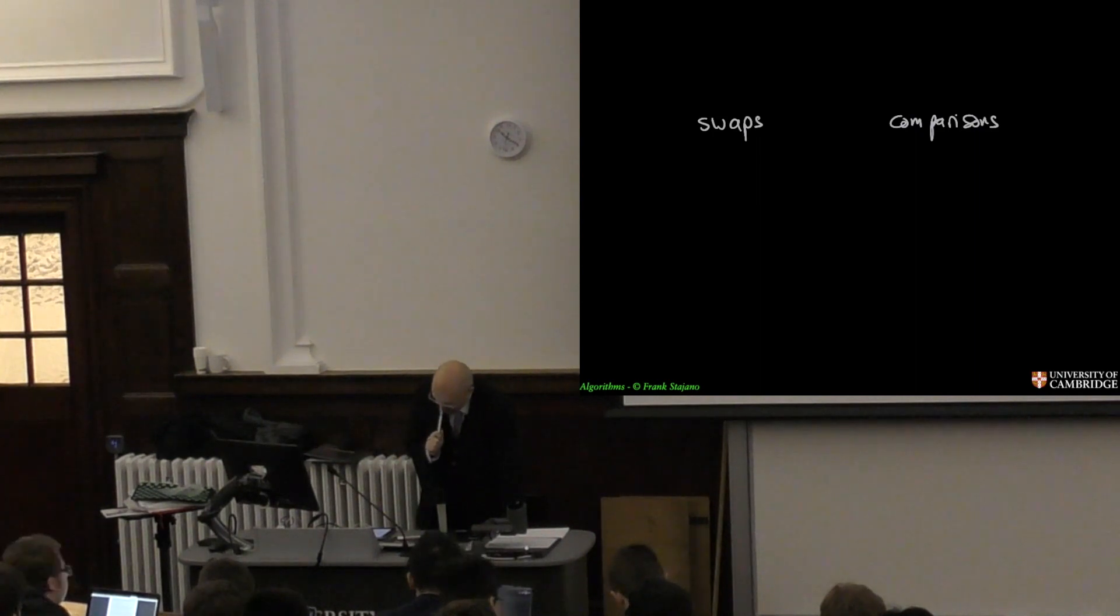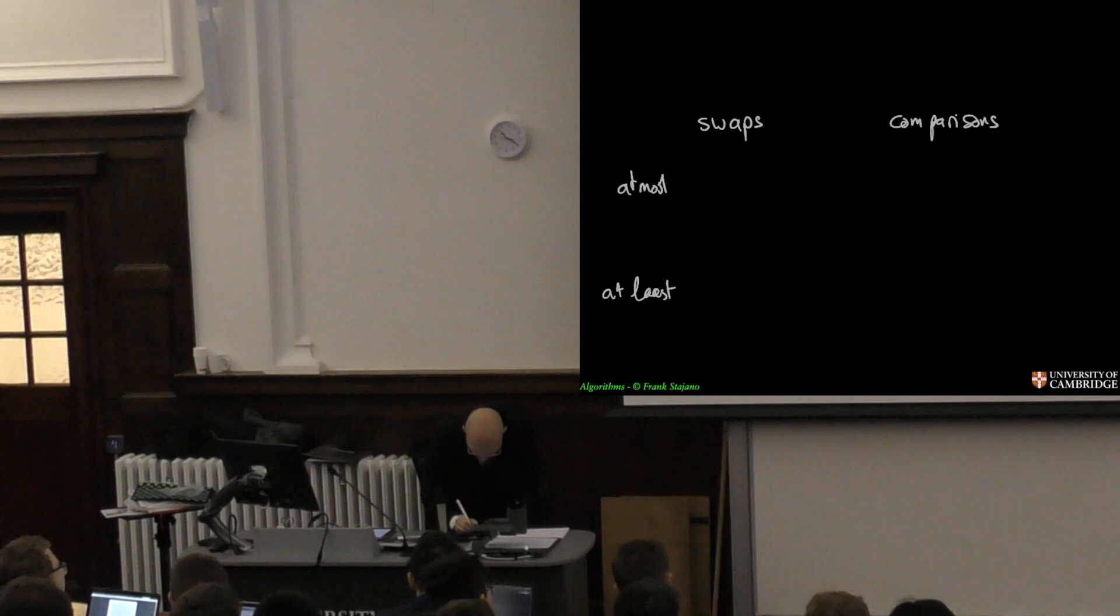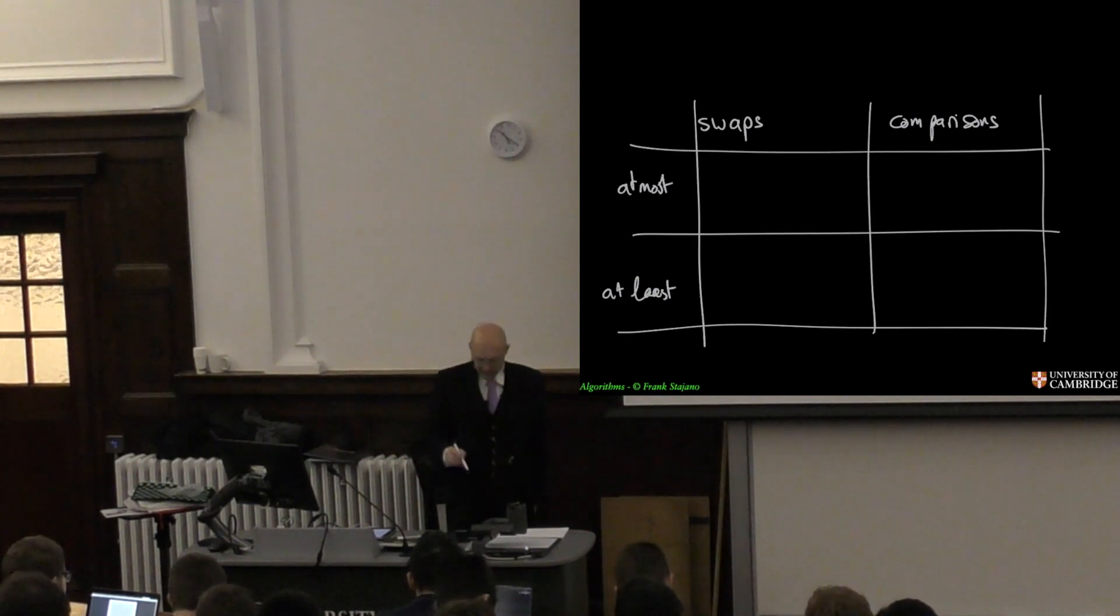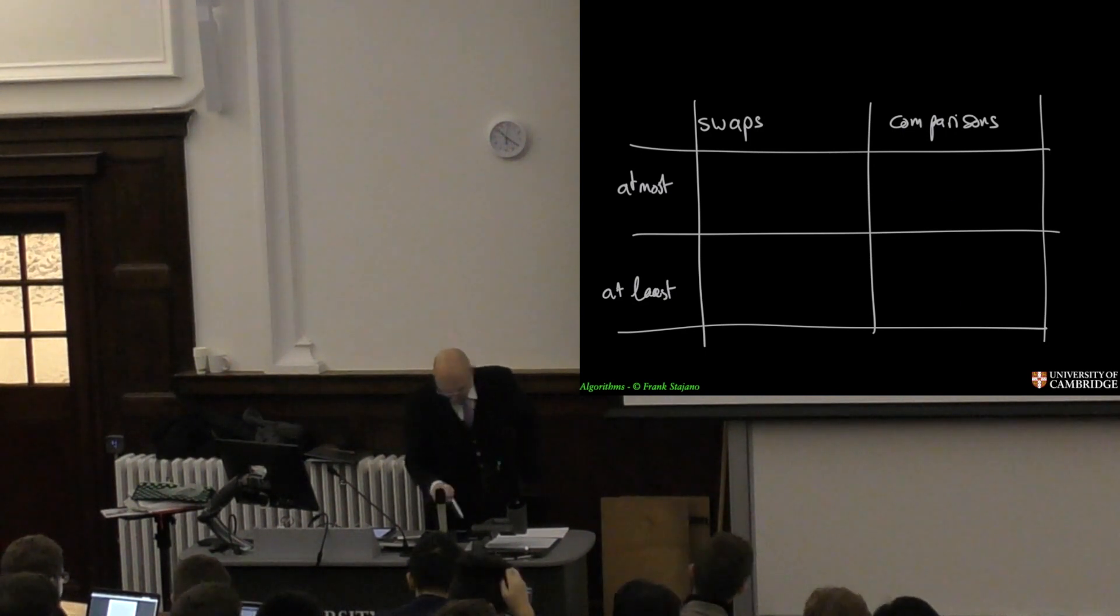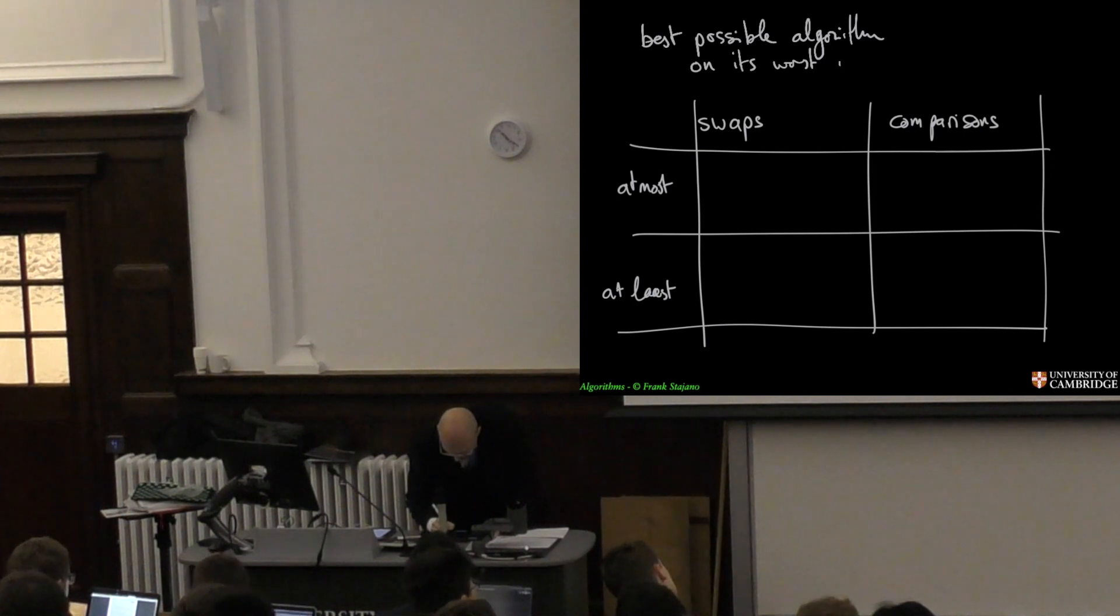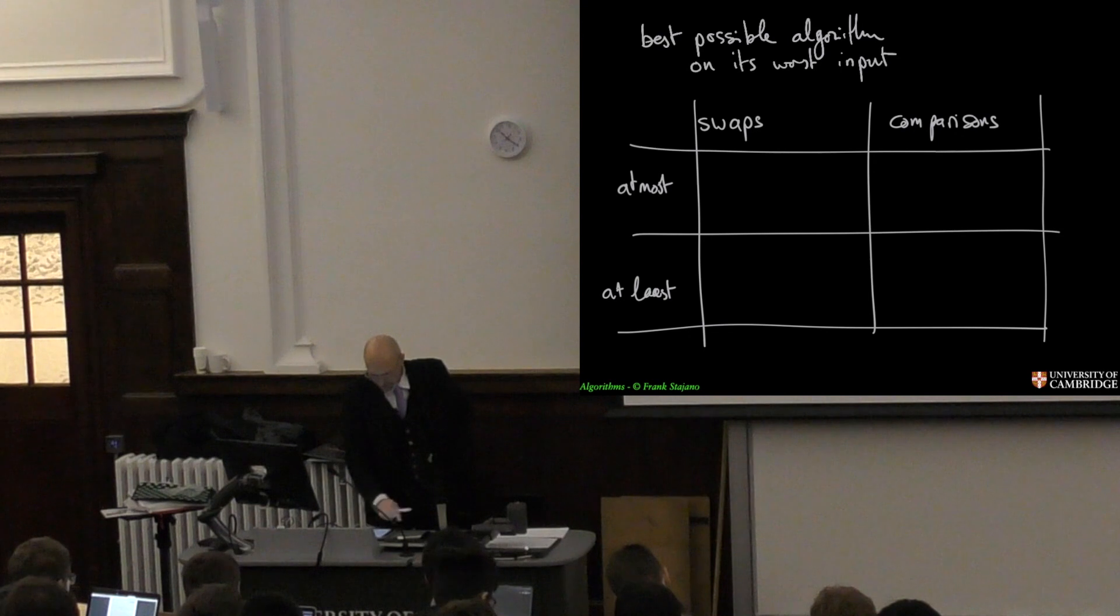My best possible algorithm even on its worst possible input will do at least and at most, at least this many swaps, at most this many swaps, at least this many comparisons, at most this many comparisons. This is the best possible algorithm on its worst, I mean at least favorable input.